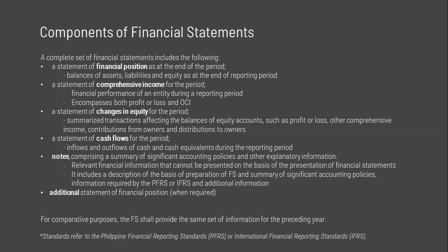If the function of expense method is used, additional disclosures on the nature of expenses shall be provided, including depreciation and amortization expense and employee benefits expense. This information is useful in predicting future cash flows. Other comprehensive income, or OCI, comprises items of income and expense — including reclassification adjustments — that are not recognized in profit or loss as required or permitted by other IFRS.